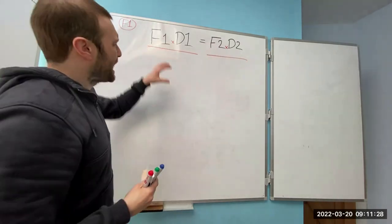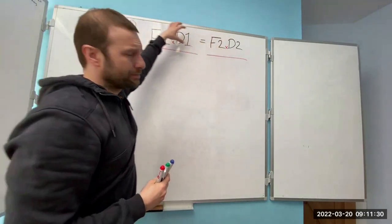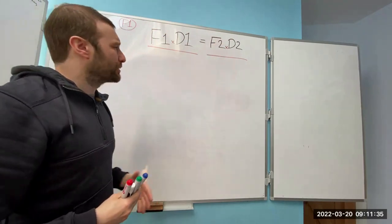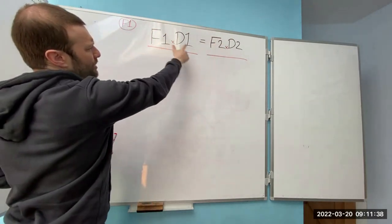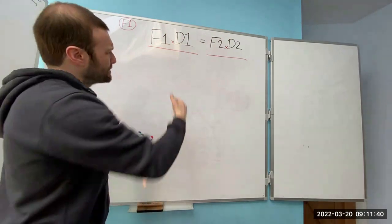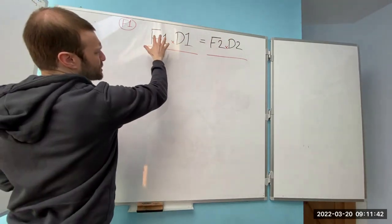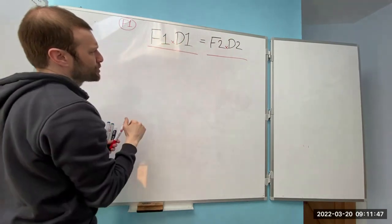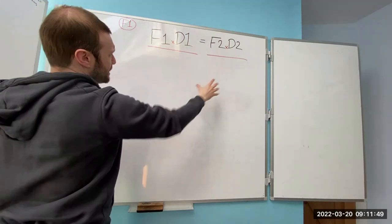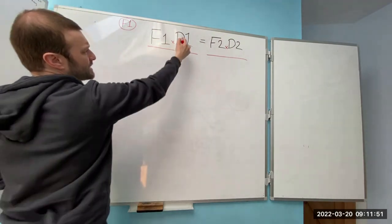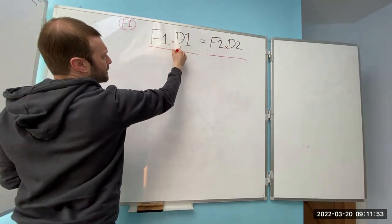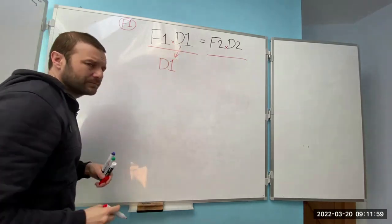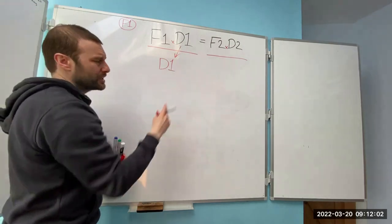This is where I'm talking about everything on the top row — anything below that would make it a fraction. So Force 1 times Distance 1: the opposite of times is divide, and I want to move D1 away from Force 1 and get it over to the other side. I need to divide it out. Whatever I do this side, I do the other side.